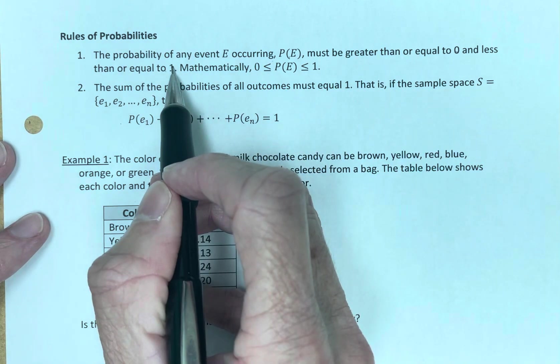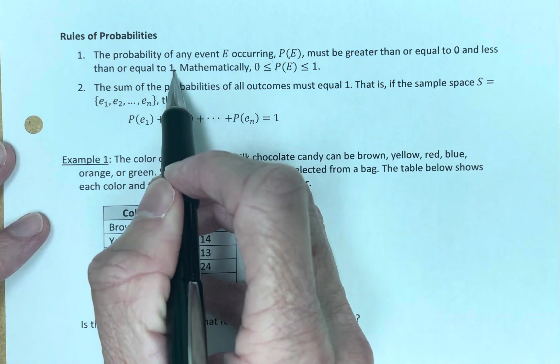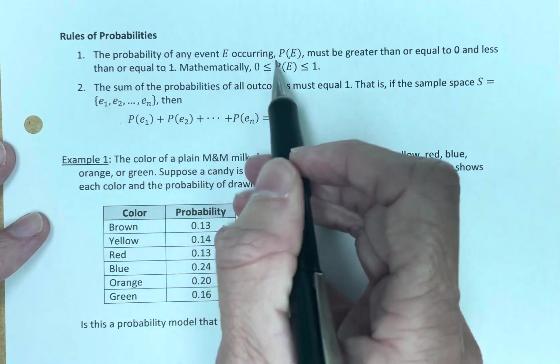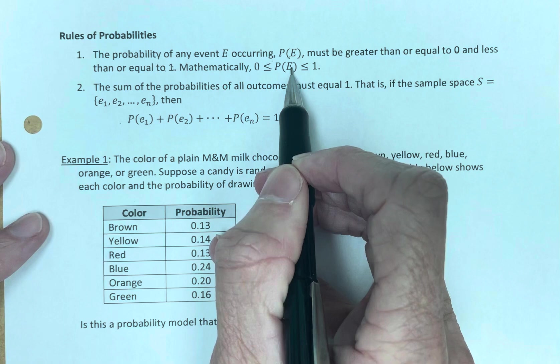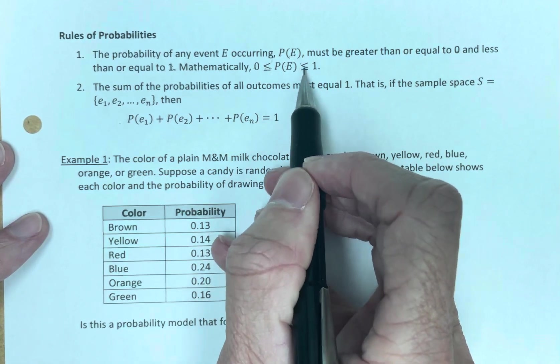One, the event will happen. This is totally will not happen. This is certain. It will happen. Mathematically, the probability of the event happening is greater than or equal to zero, less than or equal to one.